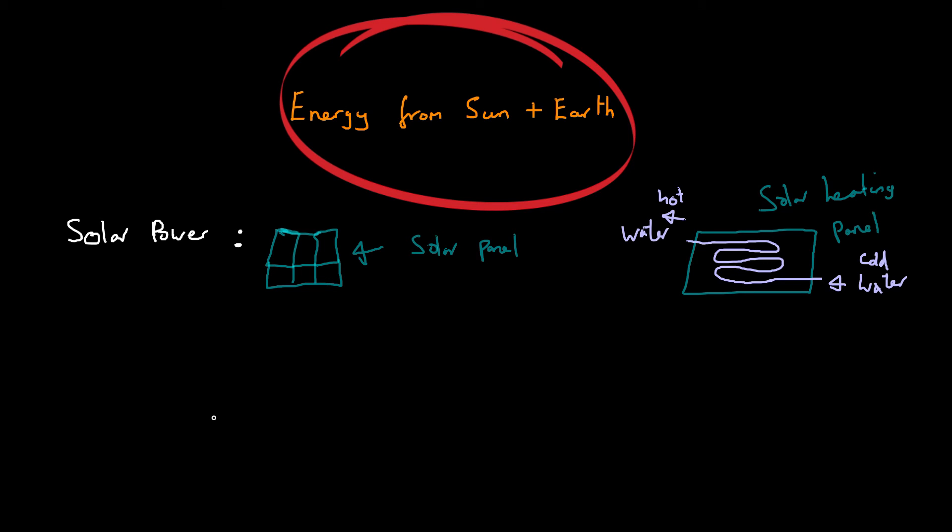Now one last way we can use solar energy, which is actually quite an advanced piece of technology, is known as a solar power tower. Tower. Now what you'll have in the tower are loads of mirrors. So you've got many mirrors. Awful handwriting here. Okay. And what they're going to do is they're going to reflect all the light at this water tank. So this is a water tank. And that is found at the top of the tower.